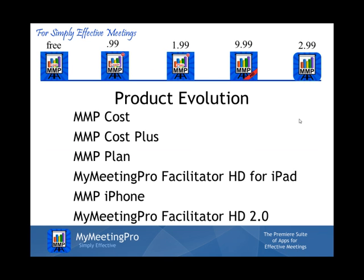Here is our product evolution. We've moved from MyMeetingPro Cost, which is free, to MyMeetingCost Plus, which is an ad-free version of MyMeetingPro. We've then moved to MyMeetingPro Plan, which is $1.99, to the MyMeetingPro Facilitator HD for iPad, which is $9.99, and the MyMeetingPro iPhone, which is a $2.99 app.